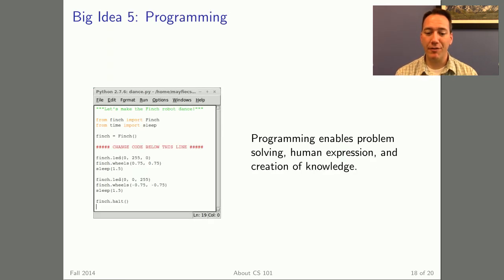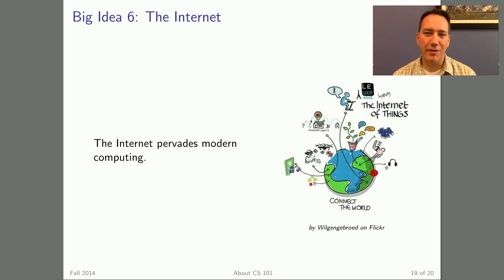Big idea number five is programming and how that not only enables us to solve problems, but also express ourselves and create new knowledge. Some of the programs you'll write will be able to draw on things that you're interested in. Big idea number six is the internet and that it pervades modern computing. The internet is everywhere. It's getting on all of our devices from our phones to our toasters. And it's going to be interesting to see where the world goes as we become more and more connected across the world.